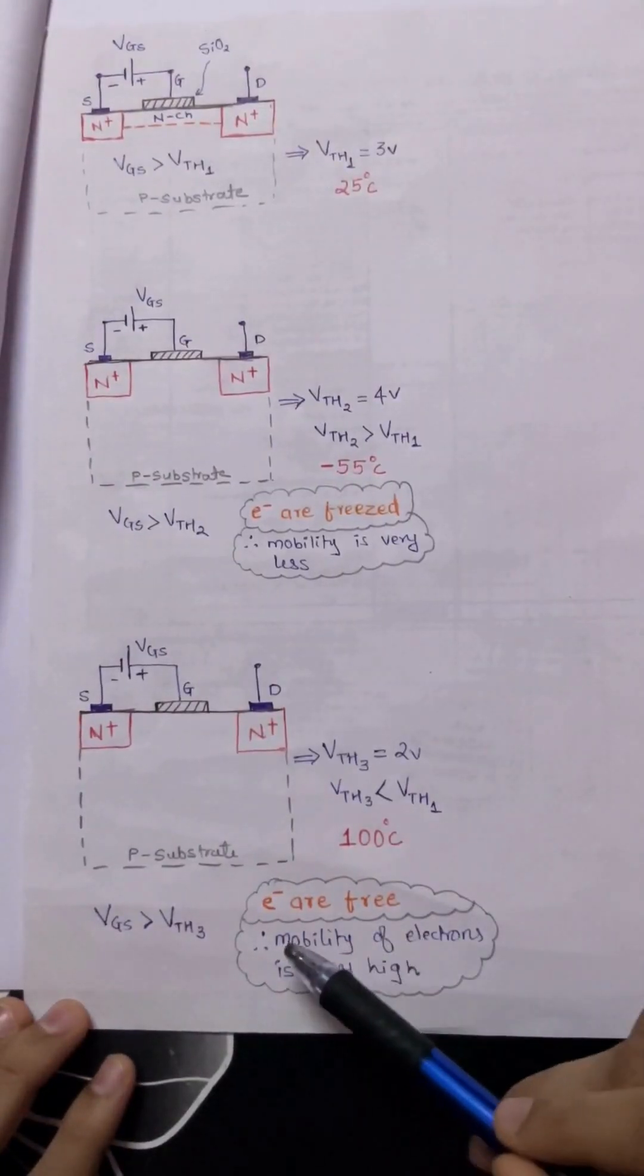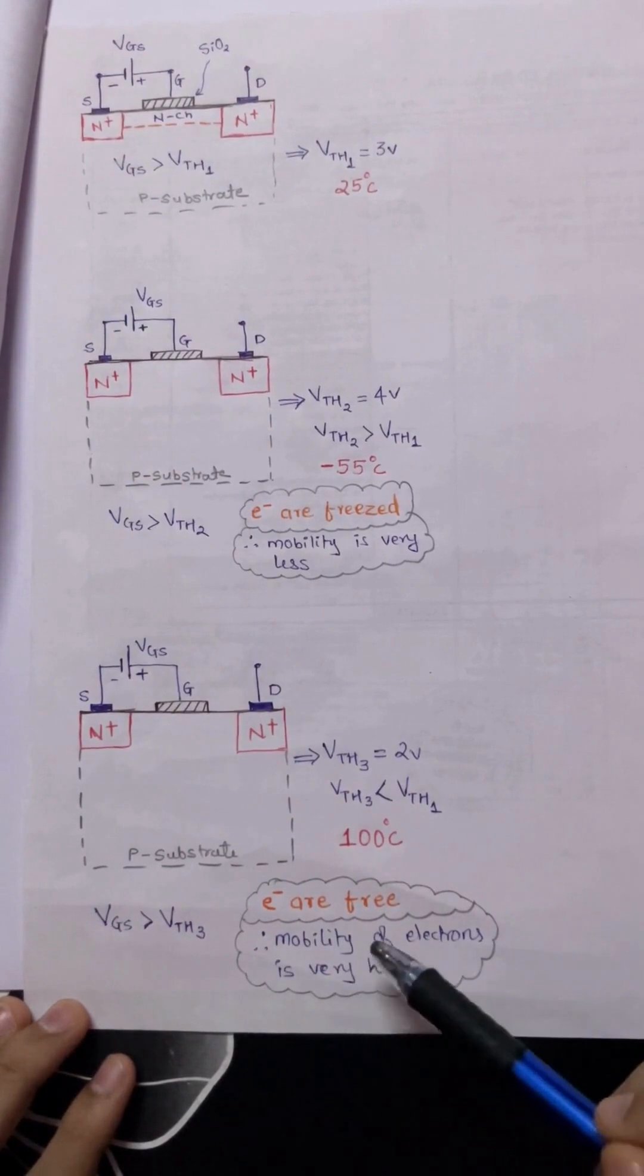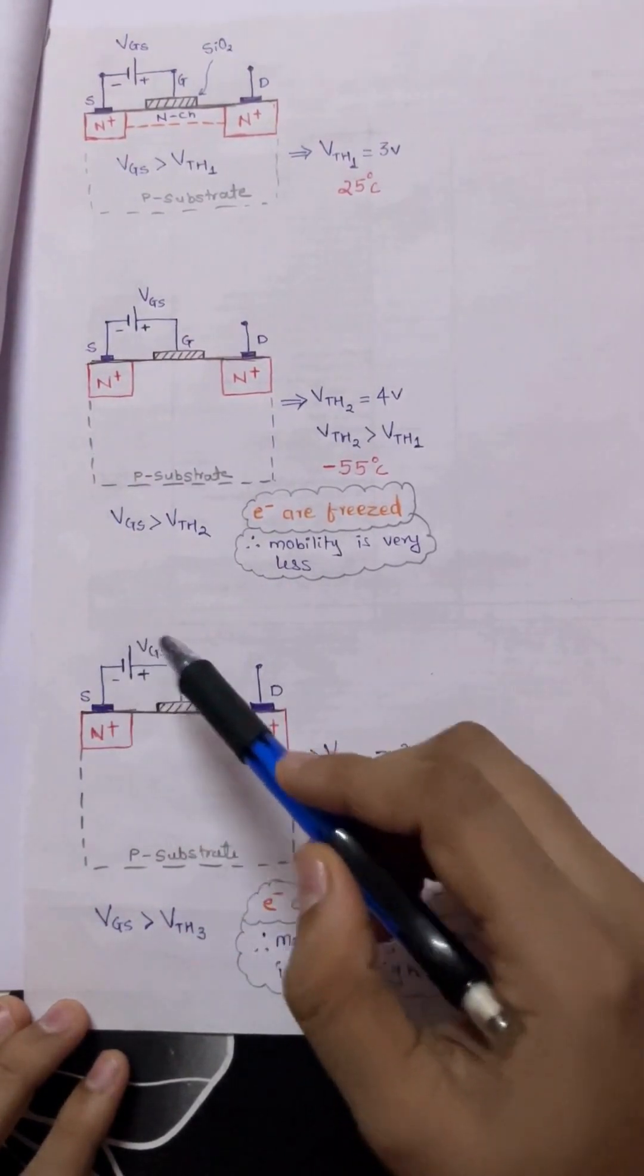Now let's assume if I'm operating the same MOSFET at around 100 degrees Celsius. This time the electrons are completely free, therefore the mobility of electrons is very very high. Thus by supplying very less voltage as well we can actually form that particular n-channel layer.